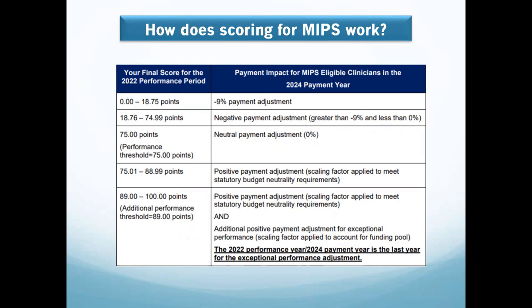The scoring is from 0 to 100. If you score 0 to 18.75 points, you get a negative payment adjustment. From 18.76 to 74.9, you get a negative adjustment between 0 and negative 9. At 75 points you get a neutral payment adjustment — neither a deduction nor an incentive. From 75.01 to 88.9, you get the normal positive payment adjustment CMS sets. If you score 89 to 100, you are considered an exceptional performer and receive an additional extra incentive on top.